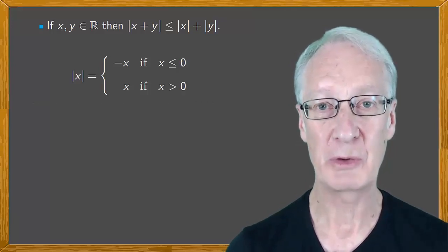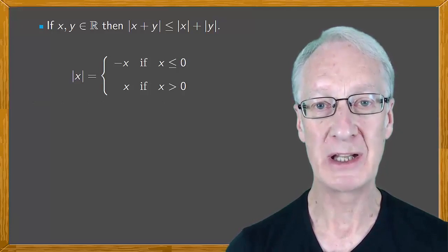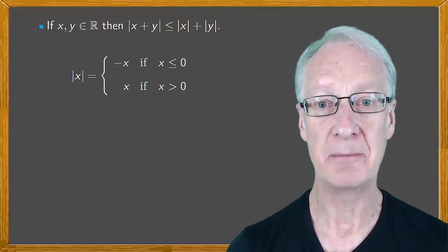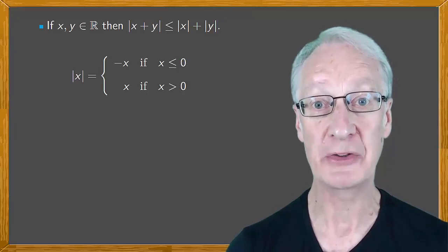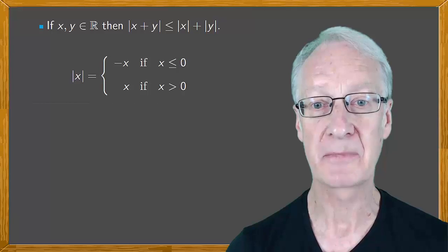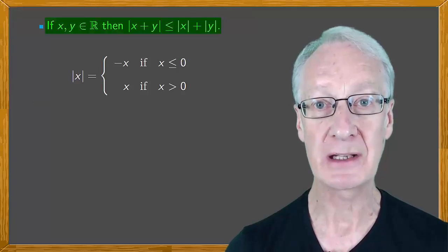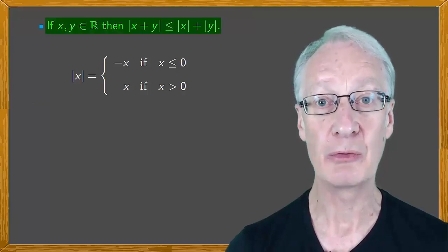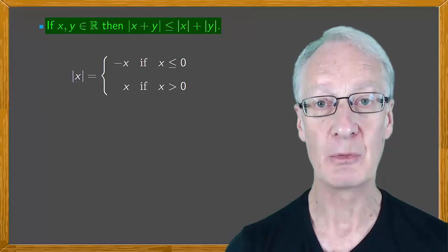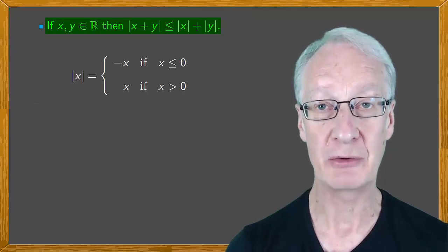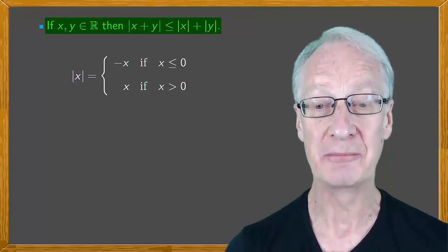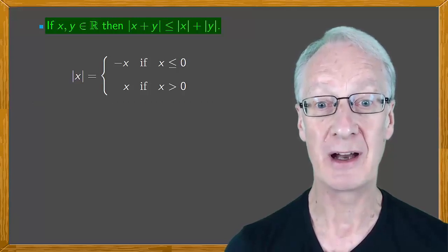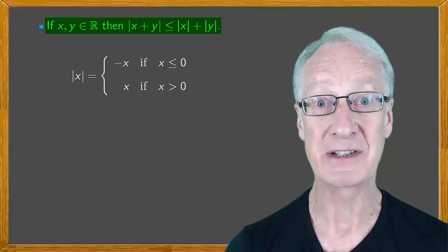Often when we want to demonstrate a property using absolute value, we have to consider different cases, depending on whether the inside of the absolute value is positive or negative. To prove the triangle inequality, we won't do it this way. We'll do it directly, in general, and we'll reason with numbers other than zero, since if x and y are zero, the property is clearly trivial.